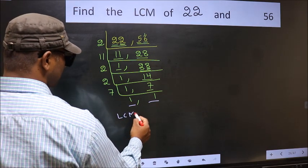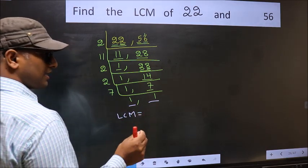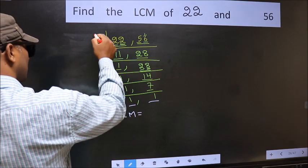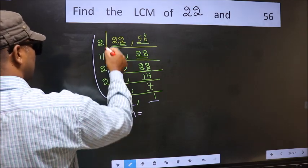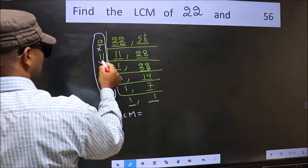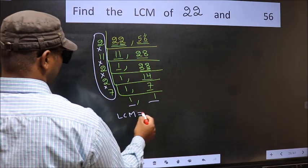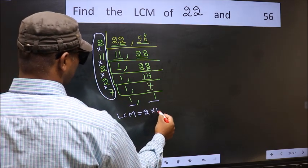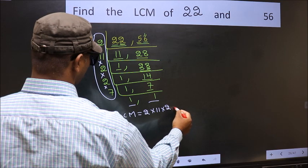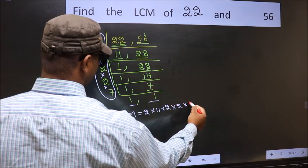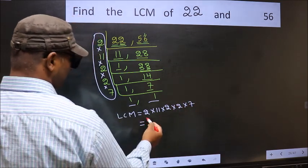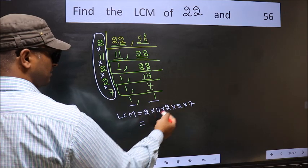So our LCM is the product of these numbers. That is 2 into 11 into 2 into 2 into 7. So let us multiply these numbers.